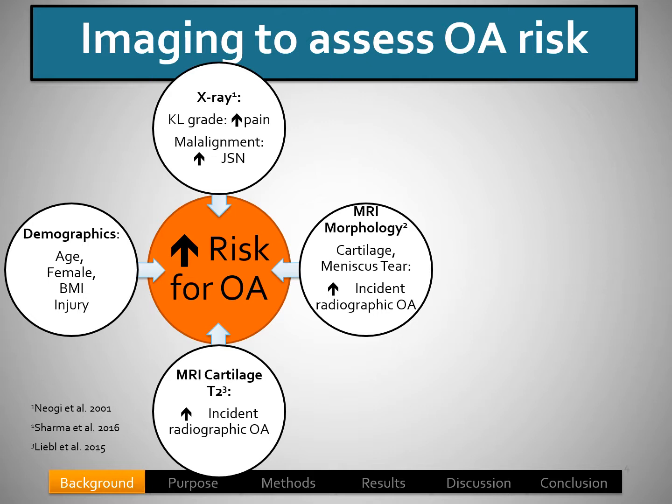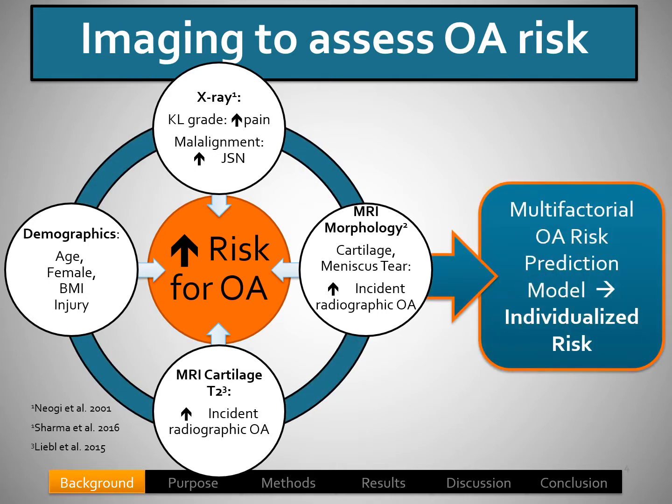In addition to these imaging findings, demographics including increased age, being female, having elevated BMI, and having a previous injury are also associated with increased risk for osteoarthritis. The idea for our study is to build a multifactorial OA risk prediction model that involves both imaging and demographic factors to determine individualized risk.